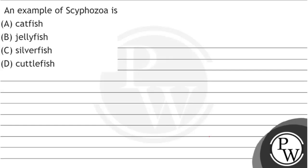Hello guys, let's read the question. The question is: an example of Scyphozoa is option A catfish, option B jellyfish, option C silverfish, option D cuttlefish.